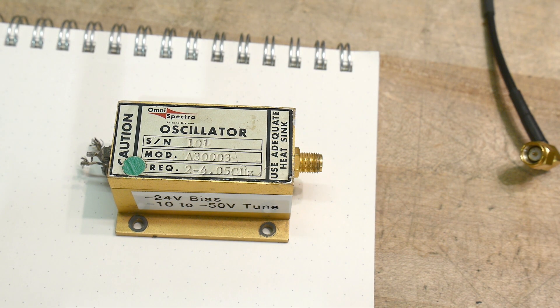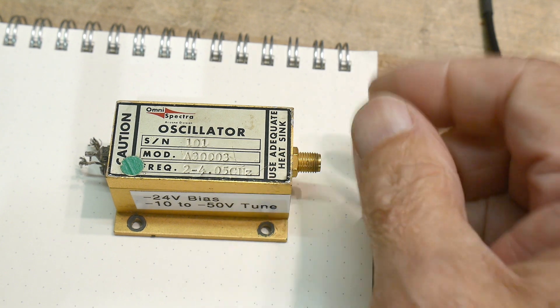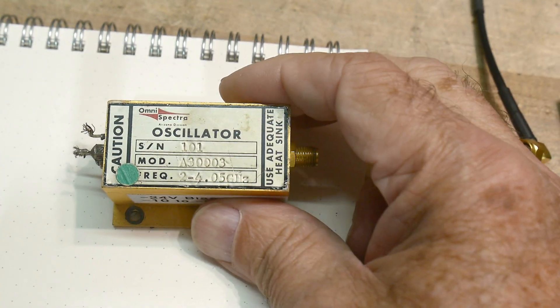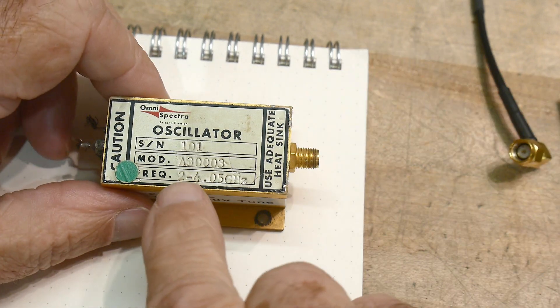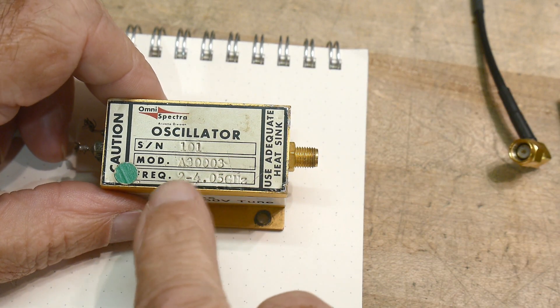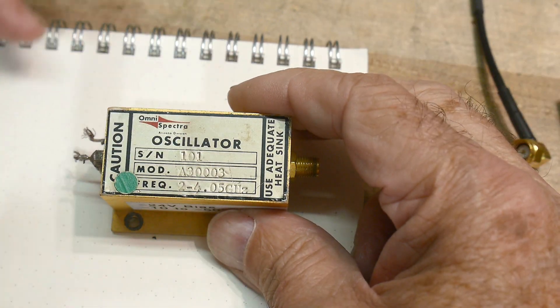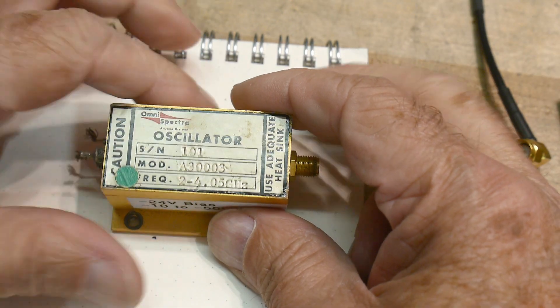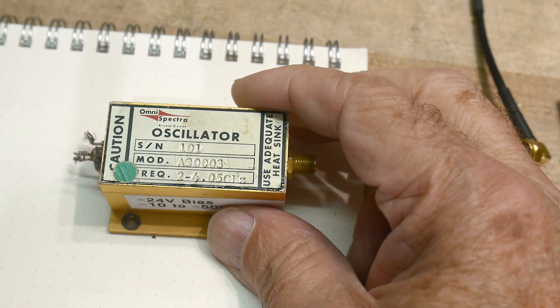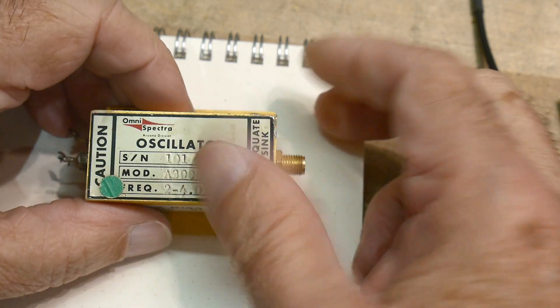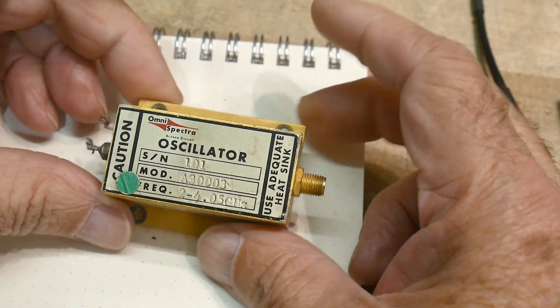I was cleaning up the garage a little bit, rearranging some things, and I ran across this, which I've had for a very long time, but I was never able to really try it out because it's an oscillator, and it goes between 2 and 4 GHz, and I've never had any equipment that could measure between 2 and 4 GHz easily. And now I have a 3.2 GHz spectrum analyzer, so I thought I would hook it up.